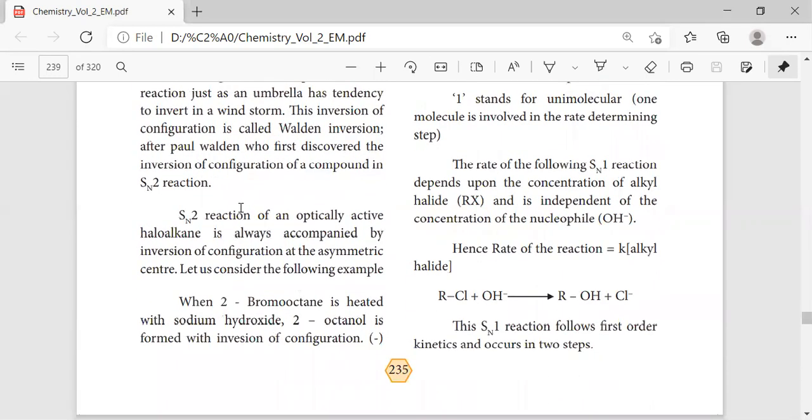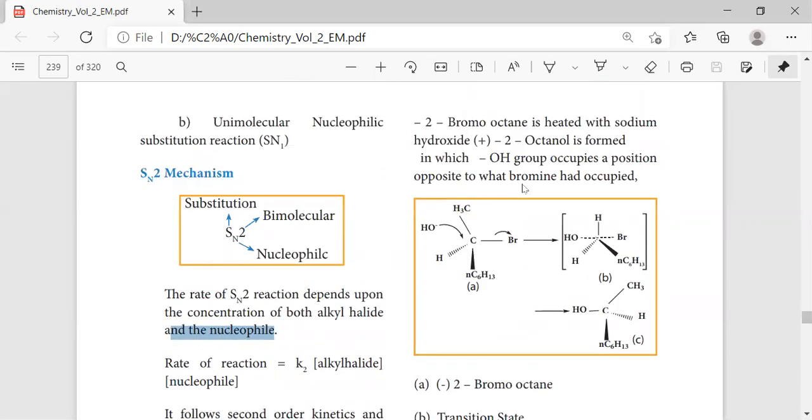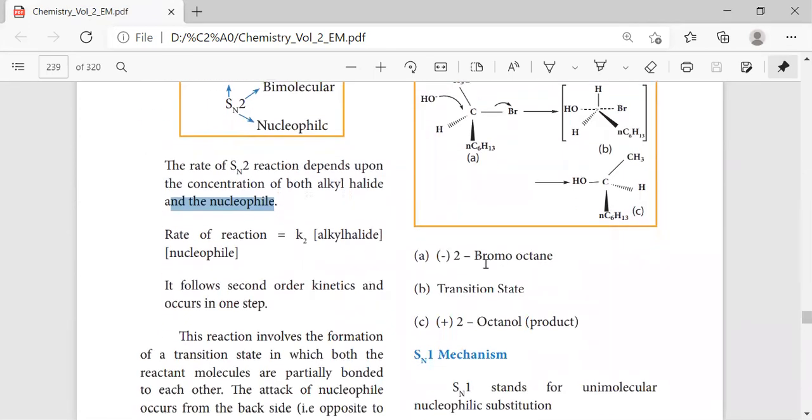Here the example is octanol. In octanol we have the alcoholic group that is going to attach. This hydrogen leads to the formation of a transition state complex, which then leads to the formation of a bond. The product is bromo-octane. From octanol, you are getting the product as bromo-octane, and here this is a transition state complex.